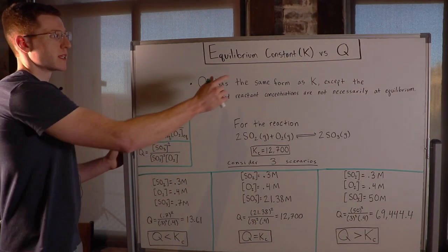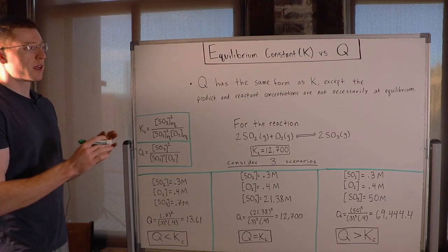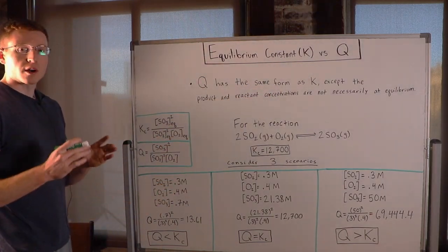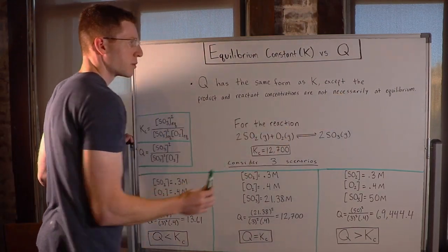In this video, we're going to look at the difference between the equilibrium constant K and the reaction quotient Q. So Q actually has the same form as K, except the product and reactant concentrations are not necessarily at equilibrium.